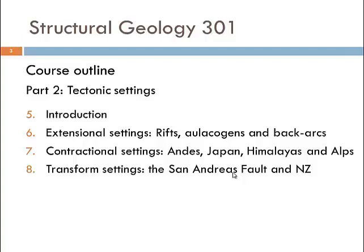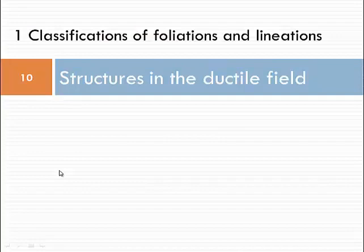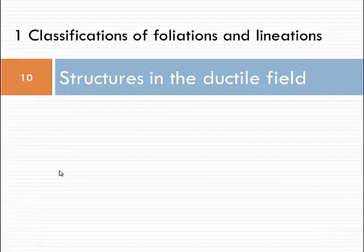And of course, transform settings — the third important group of tectonic settings — will be covered with examples from the San Andreas Fault in California and some features along the Alpine Fault in New Zealand. So let's start with the first section: structures in the ductile field — classification of foliations and lineations.